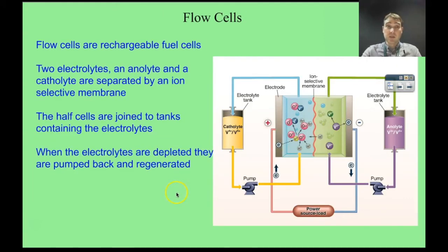Last thing we just need to talk about is flow cells. So a flow cell is a rechargeable fuel cell. You have two electrolytes. You have an anolyte and a catholyte. So anode and cathode. And they're separated by an ion-selective membrane. So here we can see the ion-selective membrane in the middle here. You have a tank of your anolyte and your catholyte.